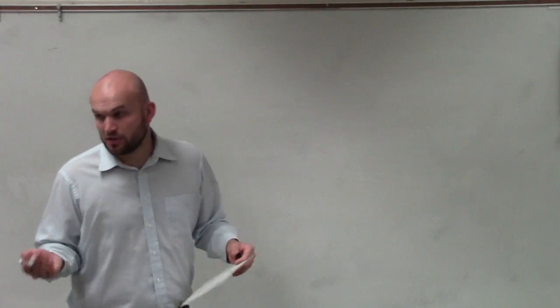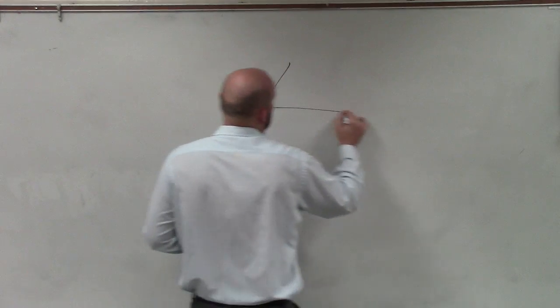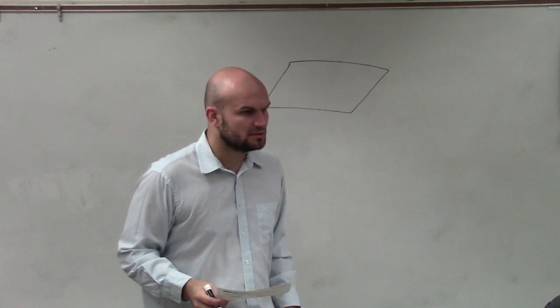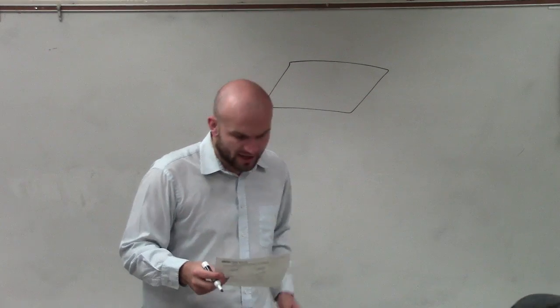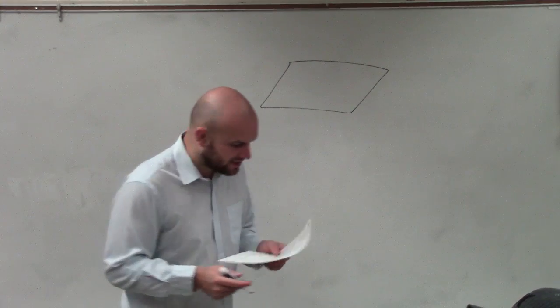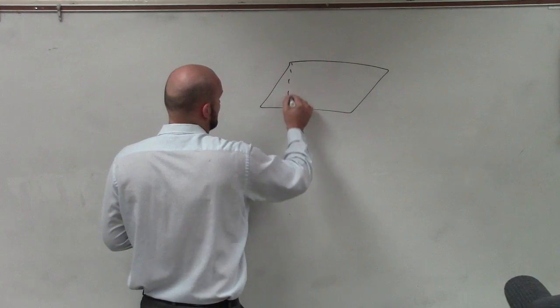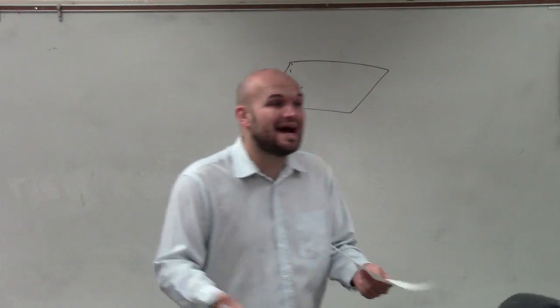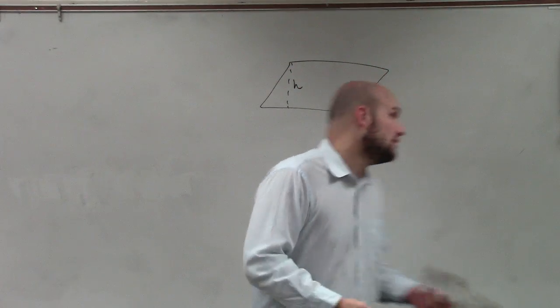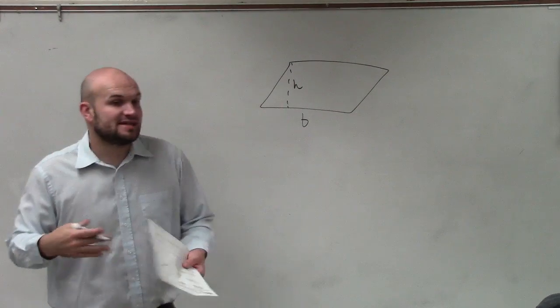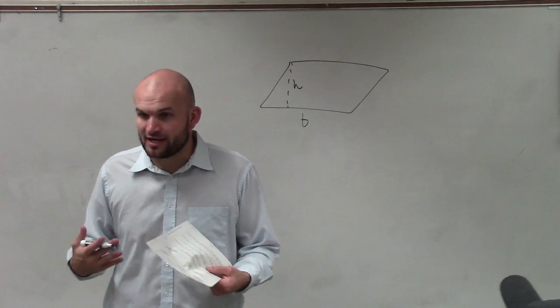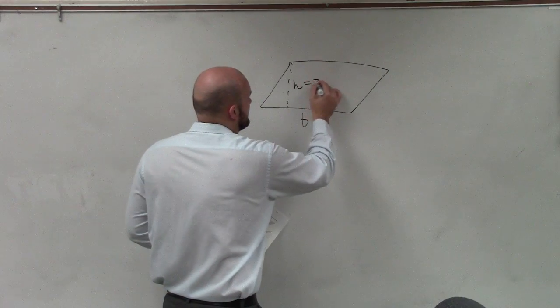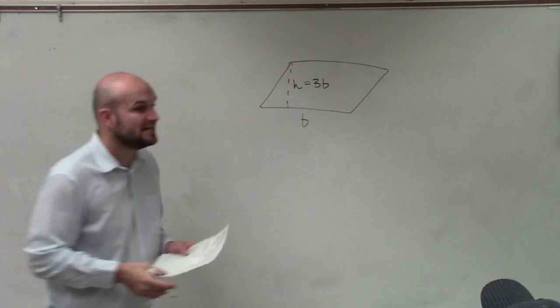So we know we're talking about a parallelogram. It's probably going to look something like this. Right? Yes. Okay, so now it says the height of the parallelogram is equal to three times the base. Now, we don't know what the base is, right? But if I was going to say something three times the base, could I write in 3b is equal to h? Would that make sense? So I can say height is equal to 3b.